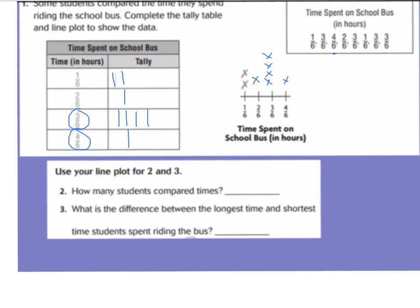Now we're going to answer some questions. How many students compared times? We just count up all the X's on our line plot: one, two, three, four, five, six, seven, eight. Eight students participated in the survey to tell how long they spent riding the school bus.